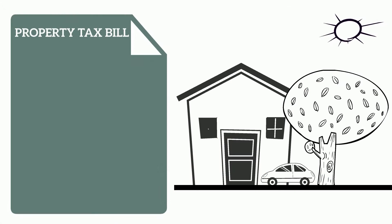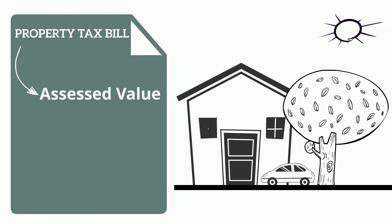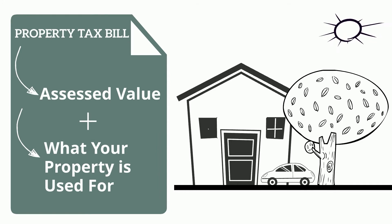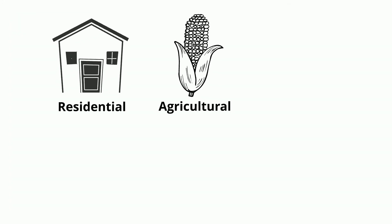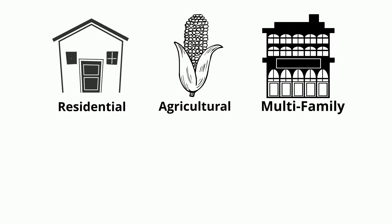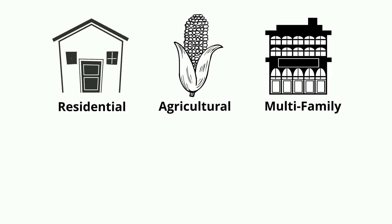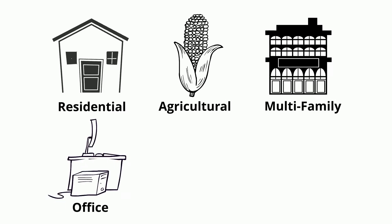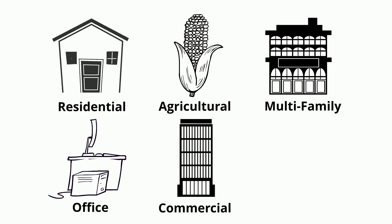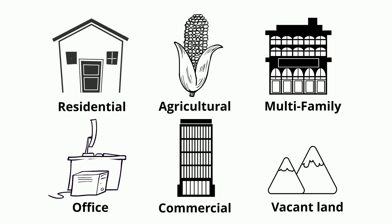In addition to the assessed value of your property, your bill is based on what your property is used for. Typical uses are residential, agricultural, multifamily, office, commercial, and vacant land.